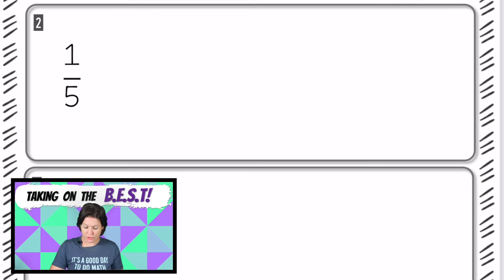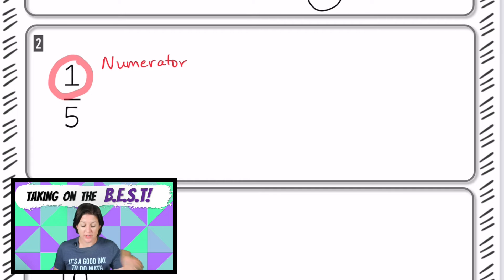For number two, we have in the numerator position, we have a one that makes it a unit fraction. This is our numerator. The numerator tells us the parts to consider. So we need to consider or shade in one part. And then we have our fraction bar. And when we jump down from the fraction bar, we have our denominator right here. That denominator tells us the total number of equal parts.